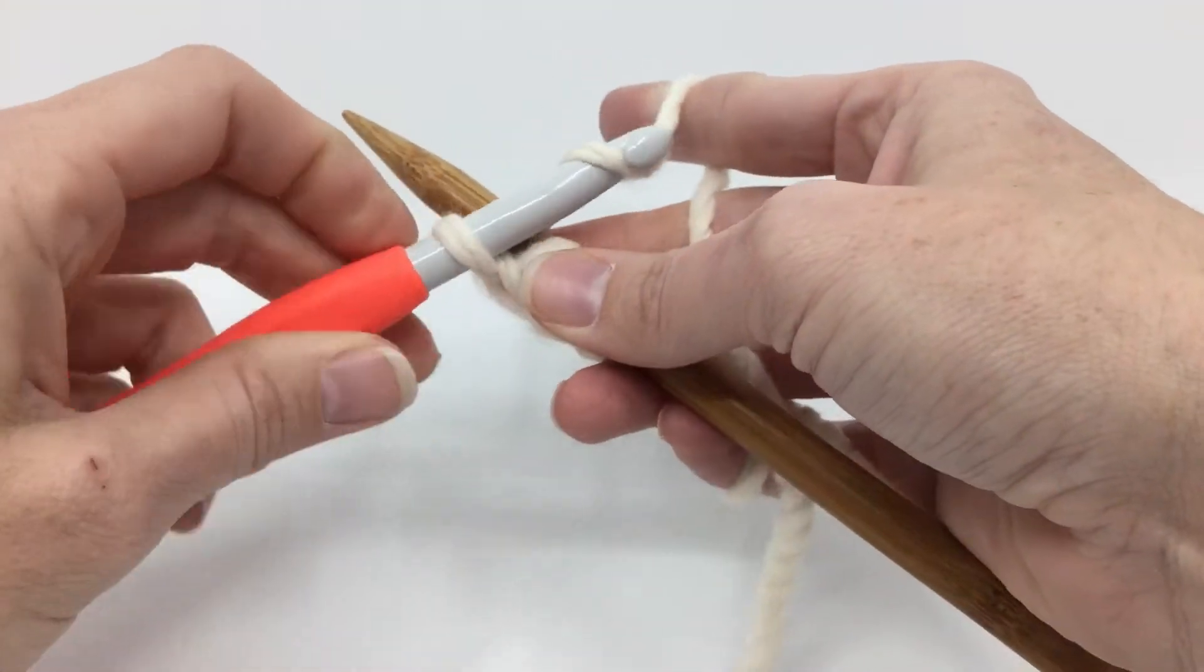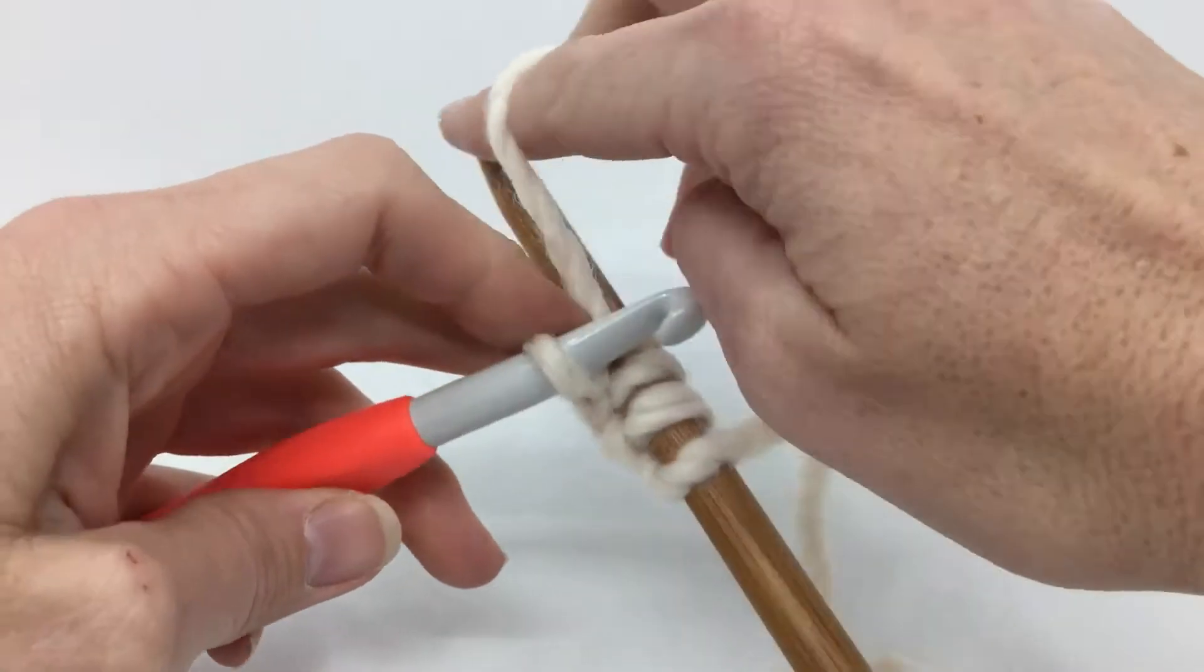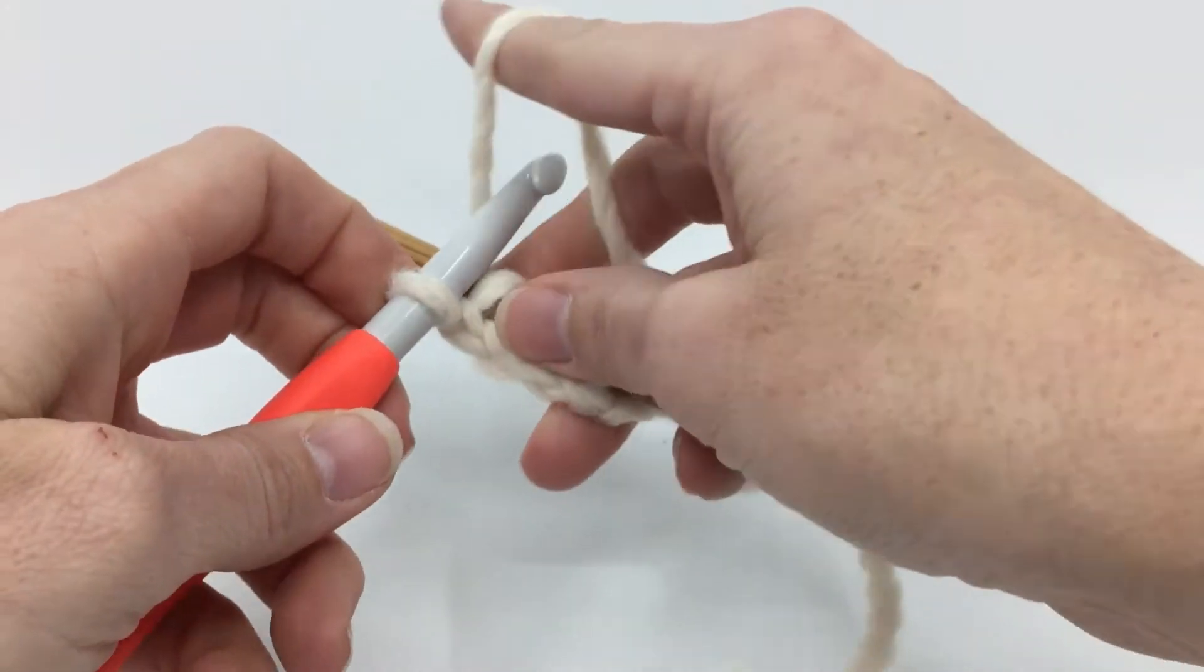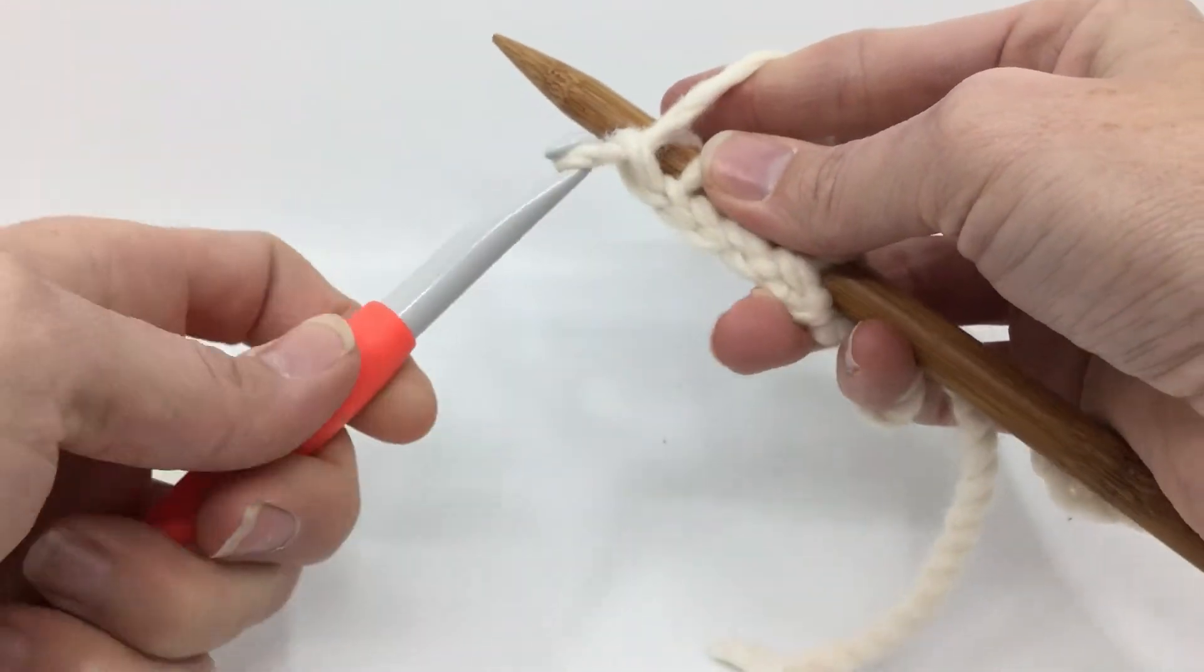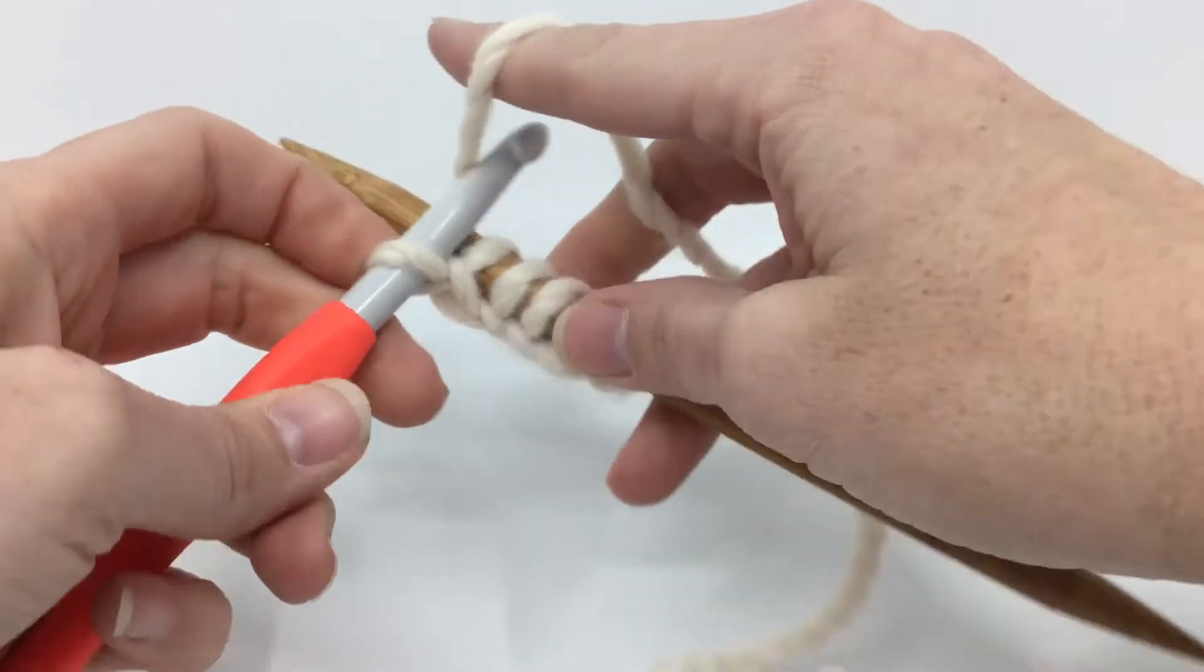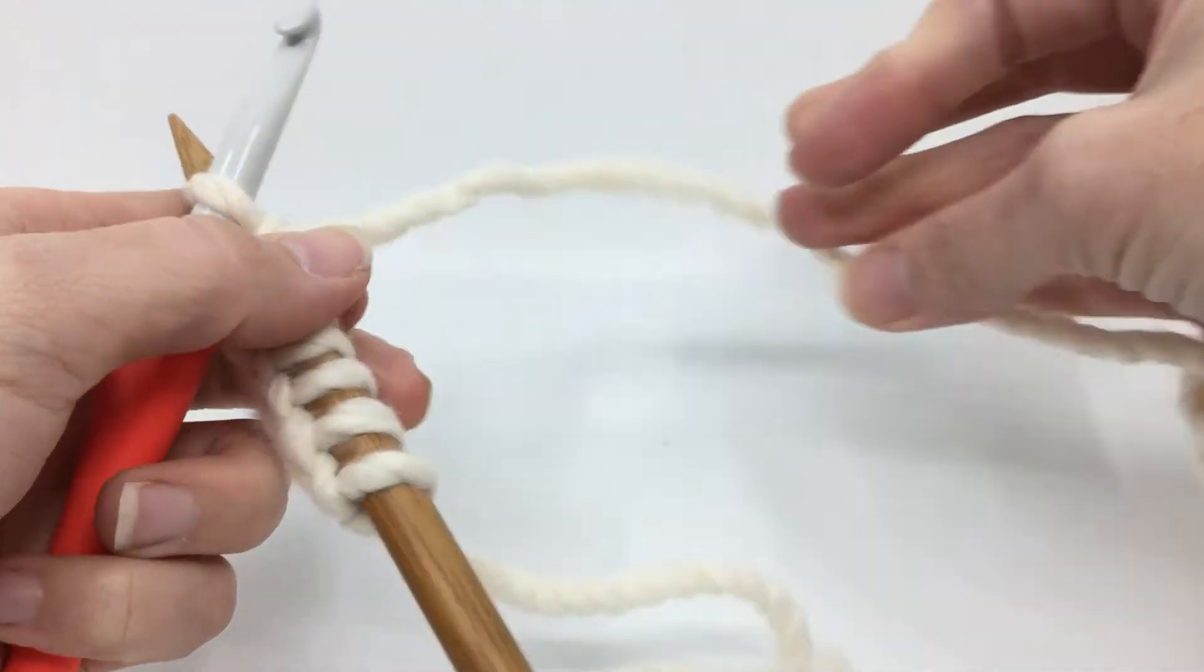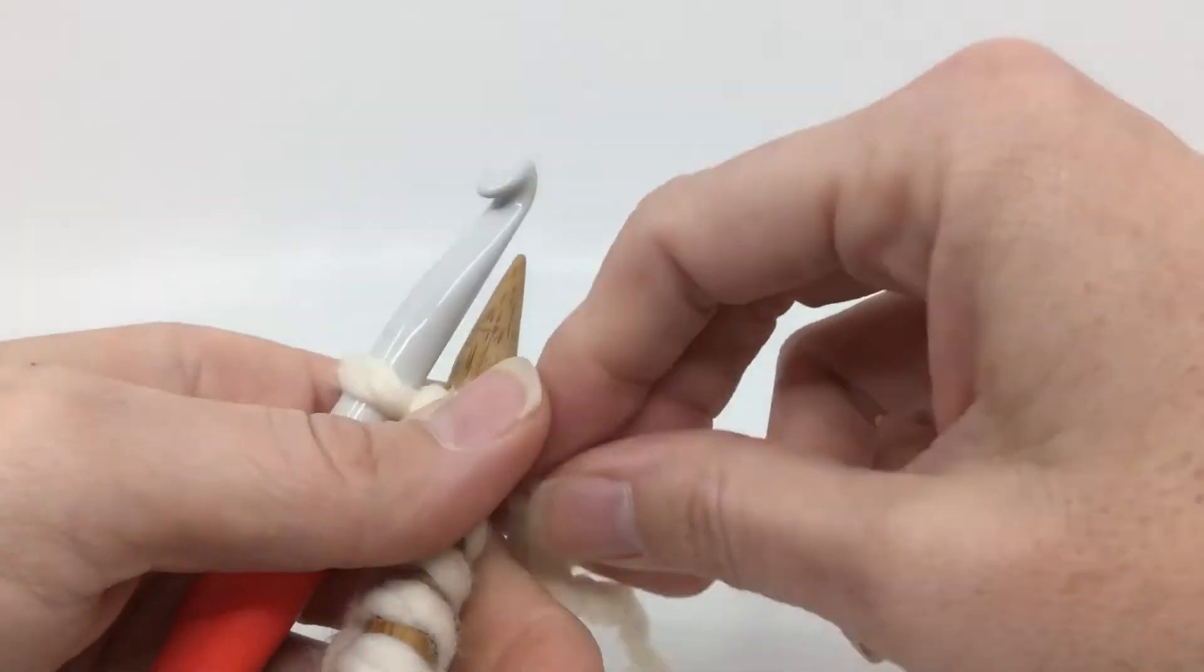You'll get into a rhythm of it. But this is basically foundation crocheting around a needle. So this will become very easy for you. You're like, why didn't you teach me this first? This is so simple, especially if you're a crocheter.